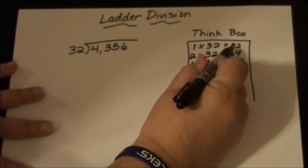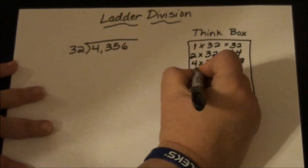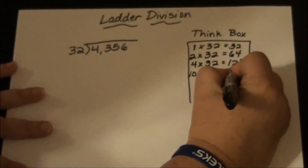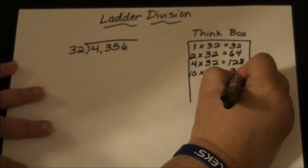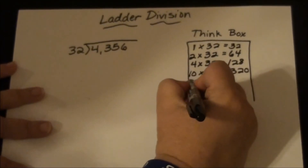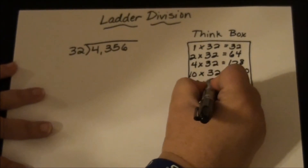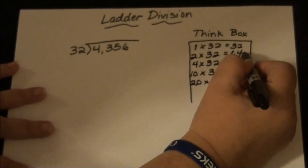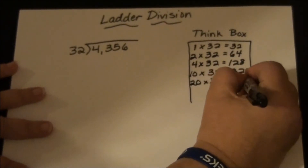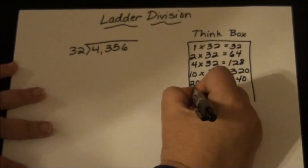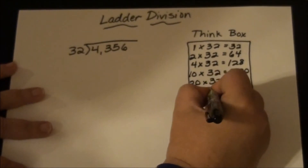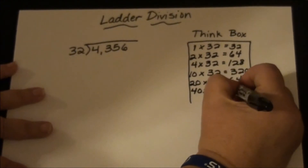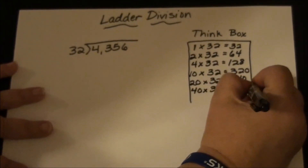So I'm going to jump to 10, because all I have to do is take the number and put a zero at the end. So 10 times 32 equals 320. Then double that: 20 times 32 equals 640. And 40 times 32 equals 1280.